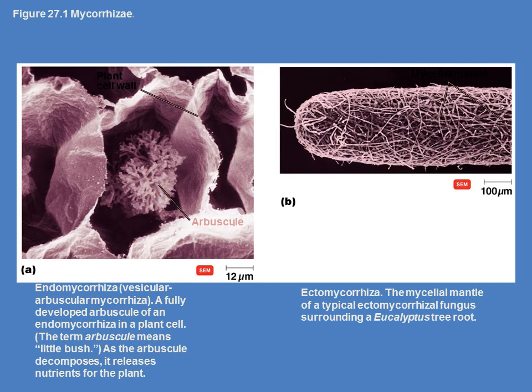In picture A, that is what we call endomycorrhizal, also known as VA or vesicular-arbuscular mycorrhizal — where the fungus is actually inside the cell of the plant root. B is the ectomycorrhizal, where the mycelium — the long individual strands called hyphae — completely covers the root. This is like putting a coat around the root, protecting it, so that anything absorbed goes through the fungus first.